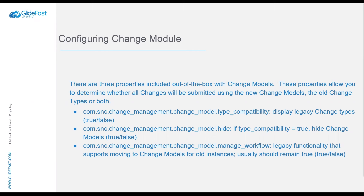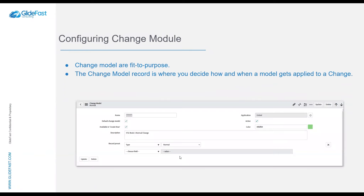When hide is set to false, it pops up that interceptor with a tagline at the end that says if you want to look at change models, you can click this link and it'll take you to the change model view. If you turn off the first property for type compatibility, it's only going to take the user to the list of change models and they will no longer have an option to select the old legacy types. The third property — ServiceNow's response was to leave it to true — it's only relevant for very old instances that used old workflow management requiring a script include to delete old workflows when new ones are attached.